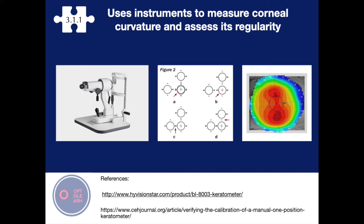There are also auto keratometers, however for the purpose of your OSCE you'll be expected to know how to use a manual keratometer if it were to come up as a practical element of your assessment. The main uses of a keratometer could be to quantify the amount of corneal astigmatism or to determine the best base curve to suit the patient's cornea.